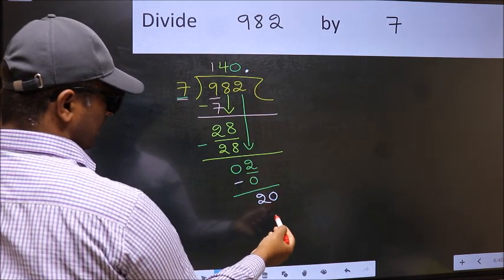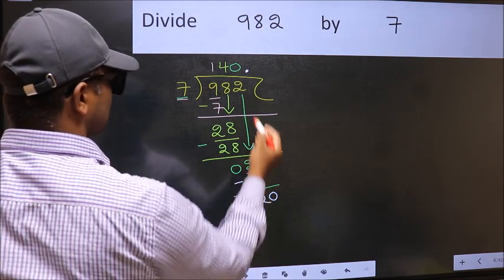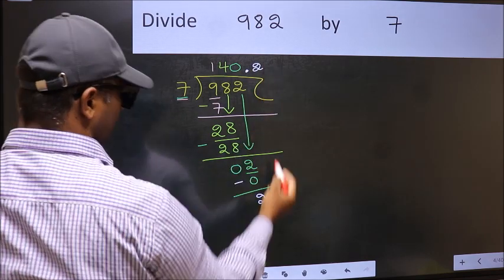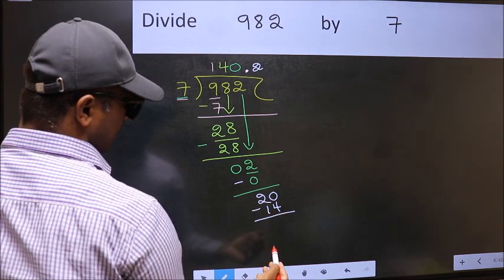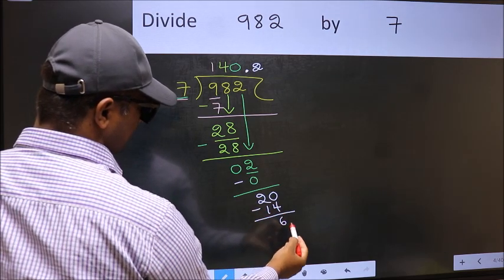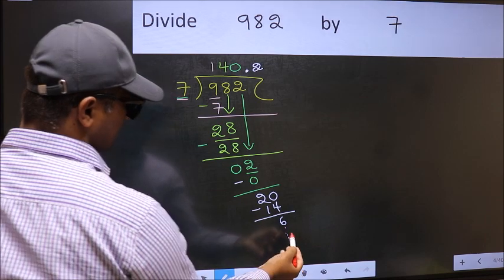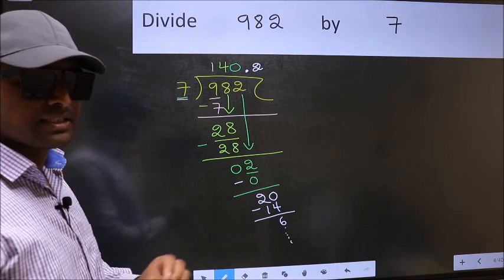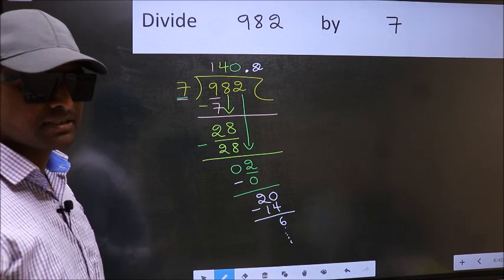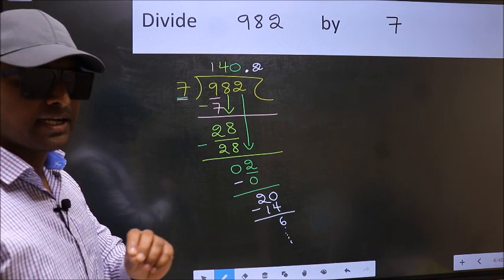So now you can put dot and take 0. So 20. A number close to 20 in the 7 table is 7 twos is 14. Now you should subtract, we get 6, and continue the division. I am not doing that. Did you understand where the mistake happens? You should not do that mistake.